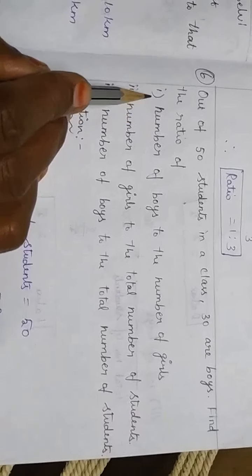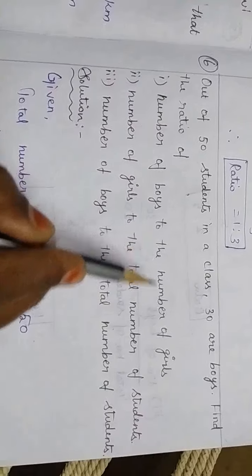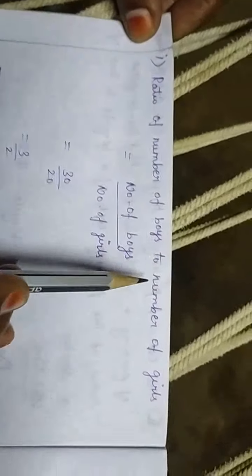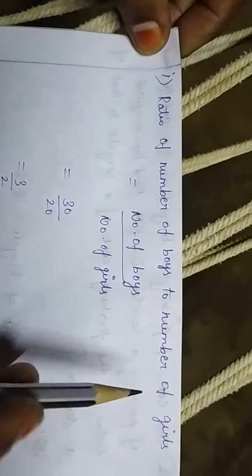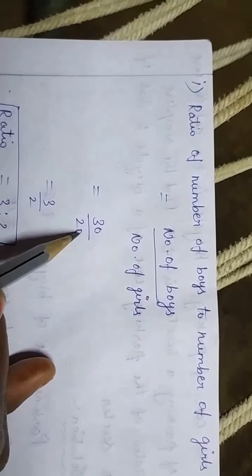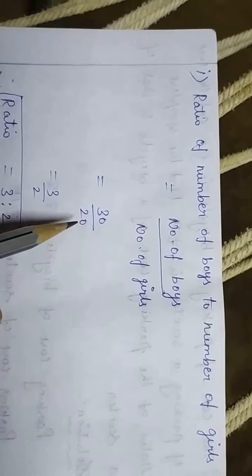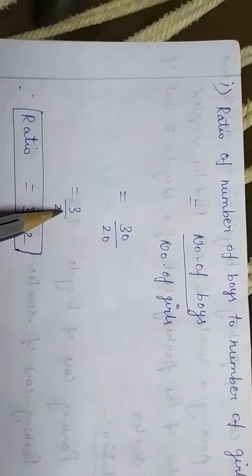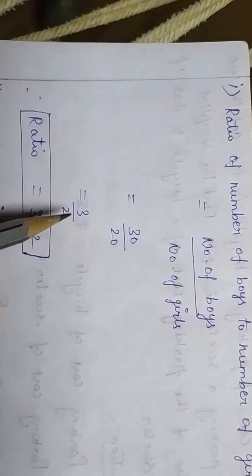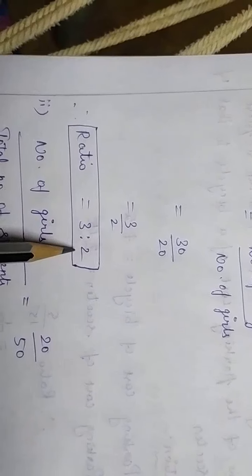Next we will see the first subdivision: number of boys to the number of girls. Ratio of number of boys to number of girls — number of boys is 30, number of girls is 20. By cancelling this we will get 3 divided by 2. Now we have to write in ratio: 3 is to 2.